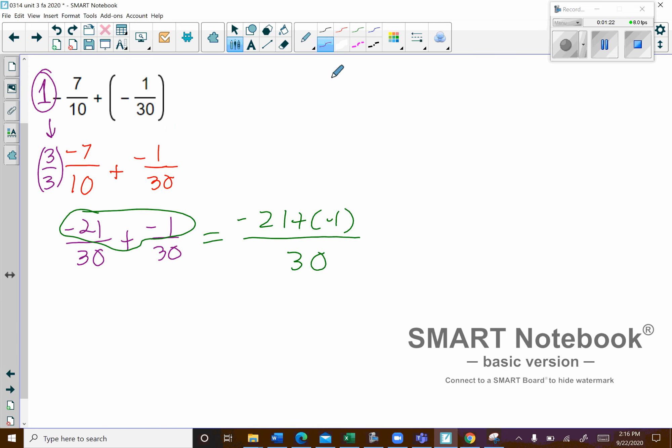Then we'll go ahead and add them together since they're on the same team. So that's going to be negative 22 over 30, and then those are both even numbers. So I know that I can at least reduce it by a factor of 2, so that's what I'm going to do here.